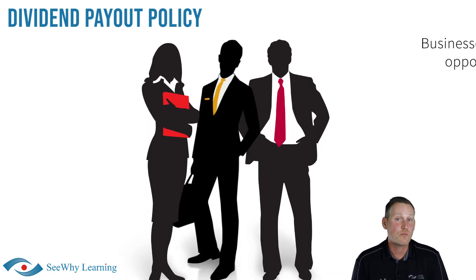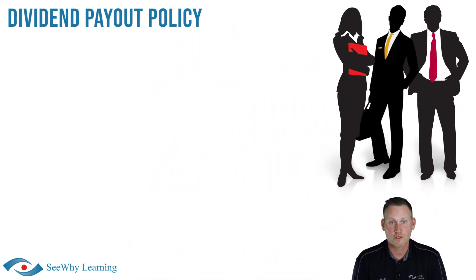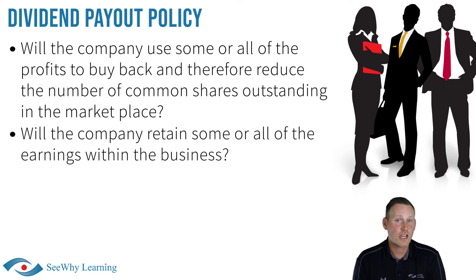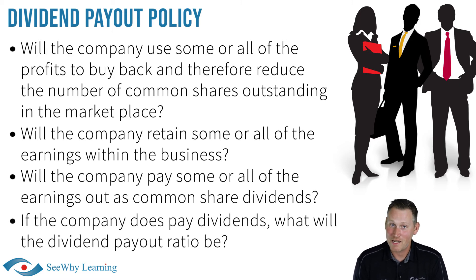When determining the dividend payout policy, a company's board of directors considers the business's needs and opportunities and will ultimately have to answer these questions: Will the company use some or all of the profits to buy back and therefore reduce the number of common shares outstanding in the marketplace? Will the company retain some or all of the earnings within the business? And will the company pay some or all of the earnings out as common share dividends? And if the company does pay dividends, what will the dividend payout ratio be?